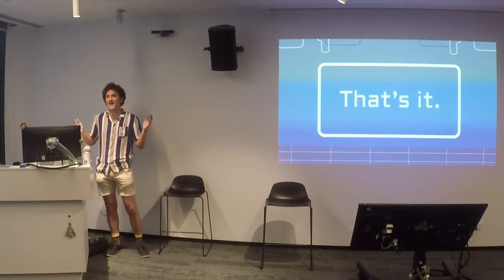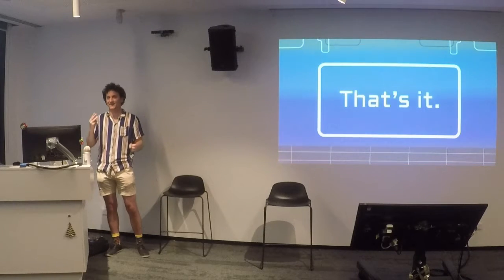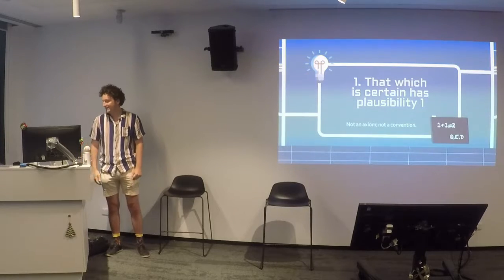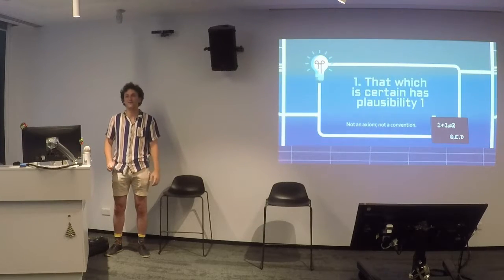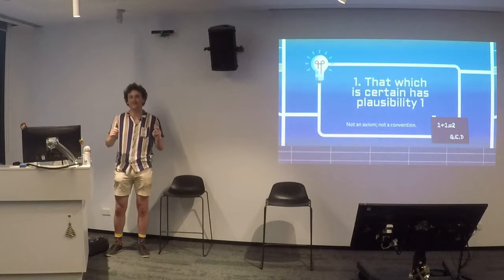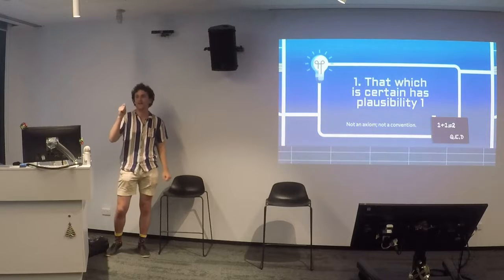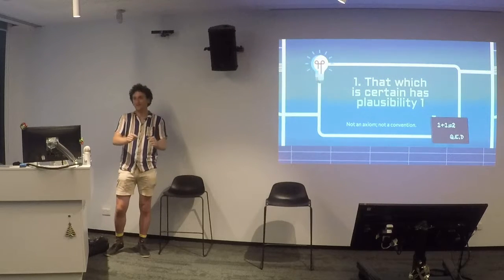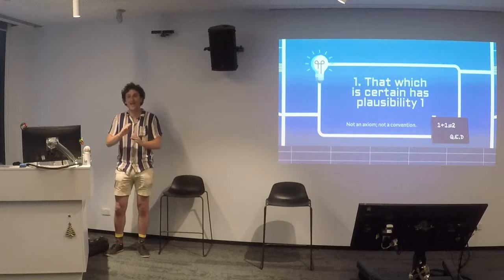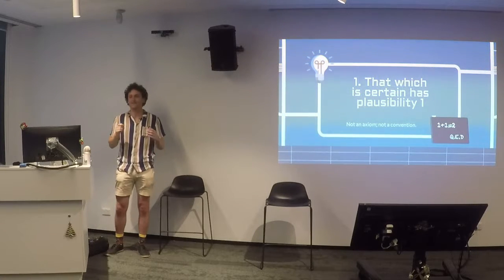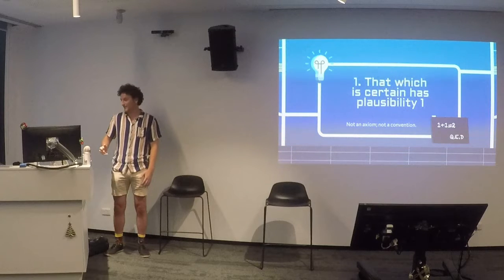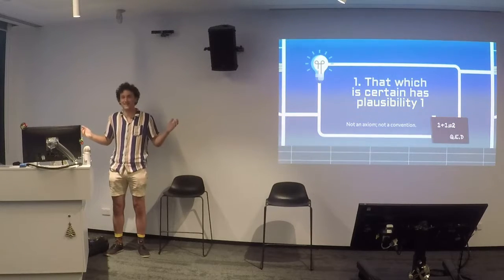Let's see some results — how far can you get just wanting these three things? The first thing you get is that the thing which is certain should have a plausibility of exactly one. If something's true, its Boolean value should be one. This is not an axiom, this is not a convention — this is a derivation, a result that you get out of the theory in Chapter 2. I think that's awesome.